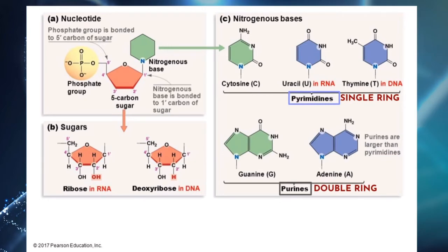In DNA, nucleotides link to other nucleotides by nitrogenous bases, and there are pairs that always link together. Cytosine always links with guanine, thymine with adenine. So one in pyrimidines links to one in purines. This is called base pairing.